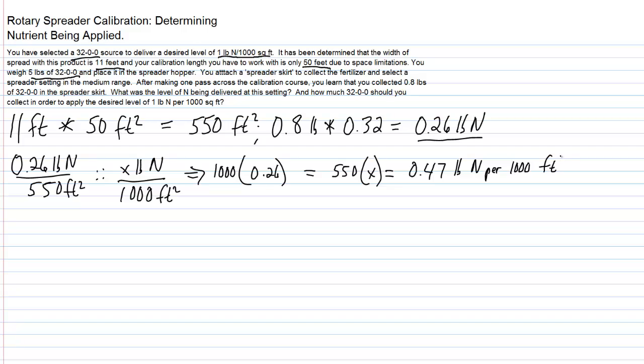So we know our spreader setting is not quite where it needs to be. We're going to have to open it up just a little bit more and keep working towards getting that desired one pound of nitrogen per thousand square feet. So the next thing we can do is determine how much 32-0-0 should we collect in order to apply the desired level one pound of N per thousand square feet over this 550 square foot area.